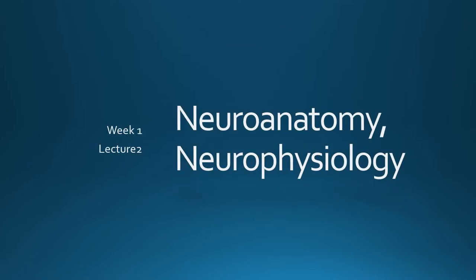Welcome to lecture two, week one. I'm going to spend a little more time on neuroanatomy of the brain. I wanted to shorten these slides so there's not too much and you don't get too lost. There's a lot to cover, so brain tissue is categorized as either white matter or gray matter.